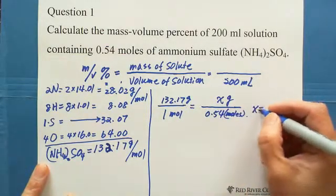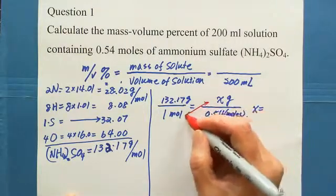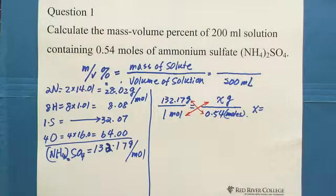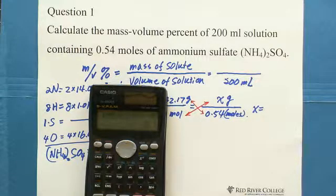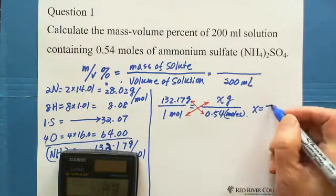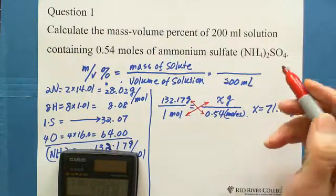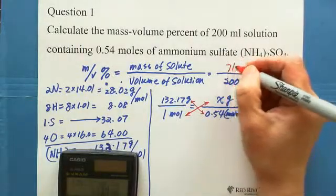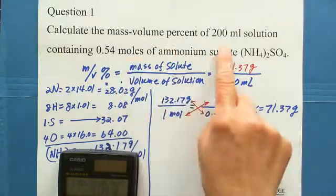We calculate using cross multiplication and ratio proportion. x equals 132.17 grams times 0.54, which gives 71.37 grams. So 71.37 grams is equivalent to 0.54 moles in the 200 milliliter solution.